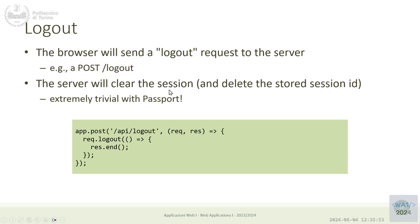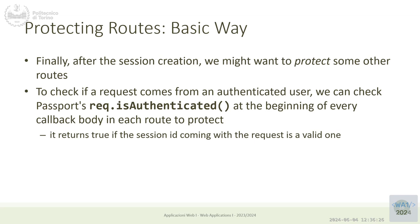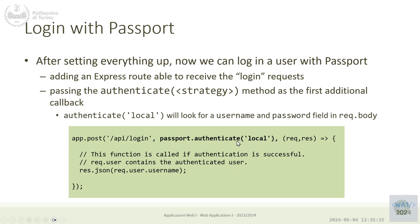Logout is easy — Passport injects a logout() method on the request. Calling request.logout() destroys the user information so the session is no longer authenticated. The big effort is setting everything up, but then we have simple methods: request.logout(), request.isAuthenticated(), request.user for all user information, and the authenticate middleware at login time. It's easy to forget something, so it may not work on the first try — there are many levels to configure: sessions, CORS, Passport, strategy, and origins.